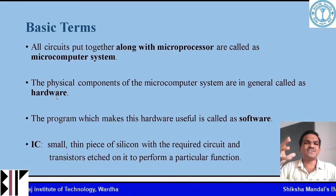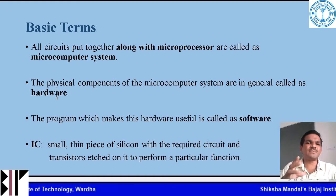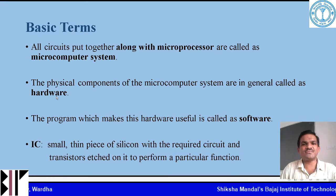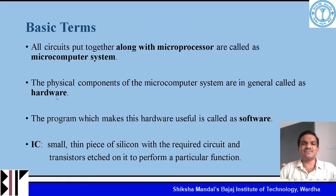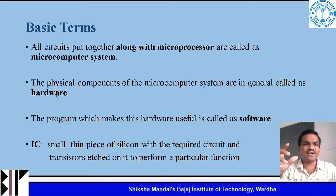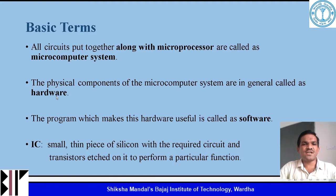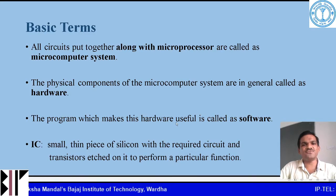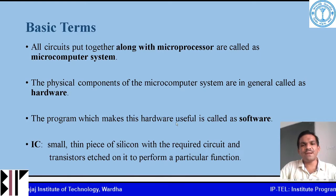The next term is hardware. Some physical components are present in your microcomputer system — this is called hardware. How you operate through this hardware is called software, which is basically a program that makes the hardware useful or operable.